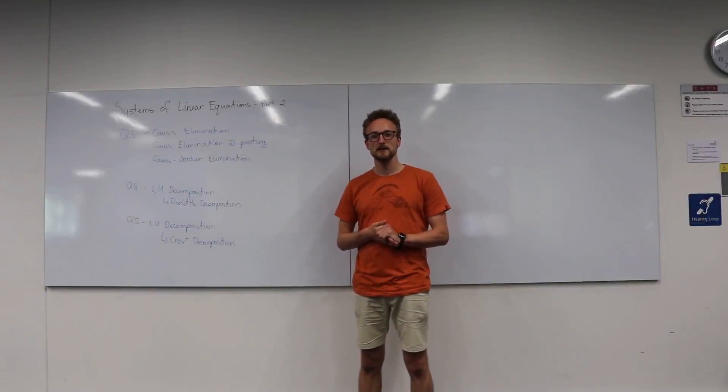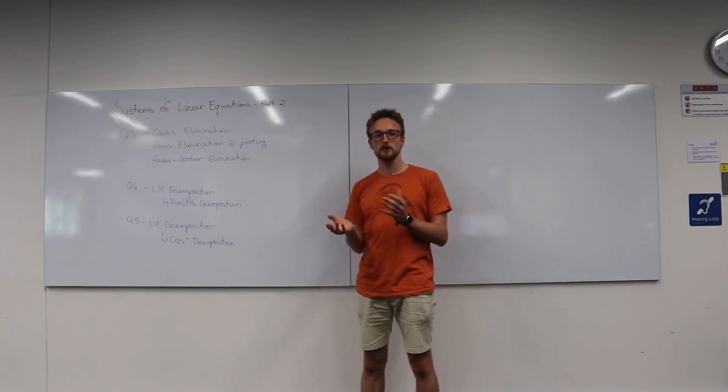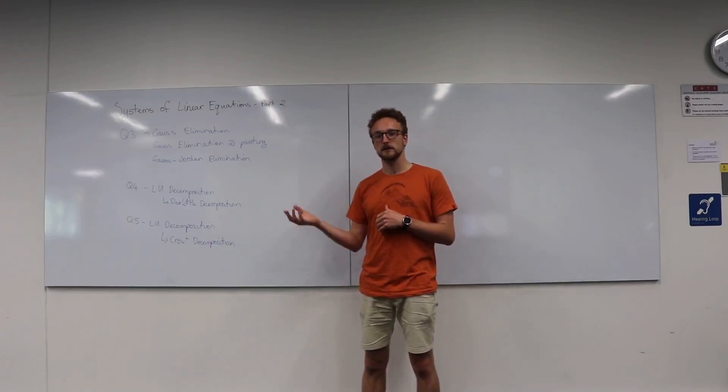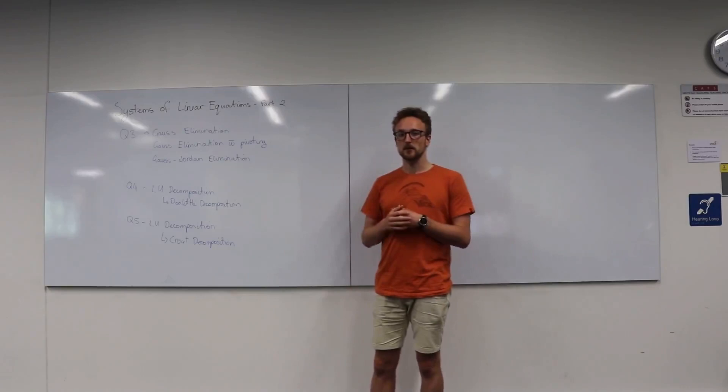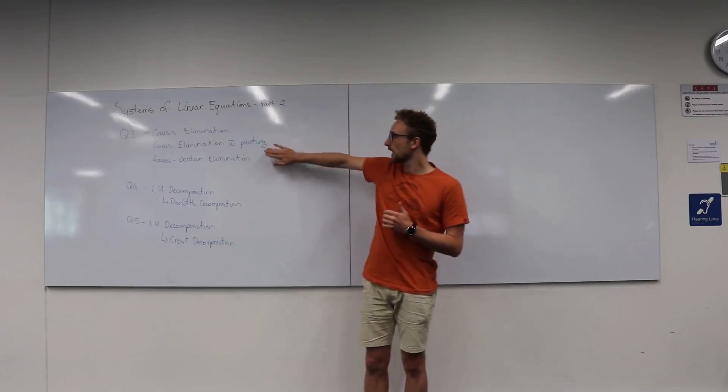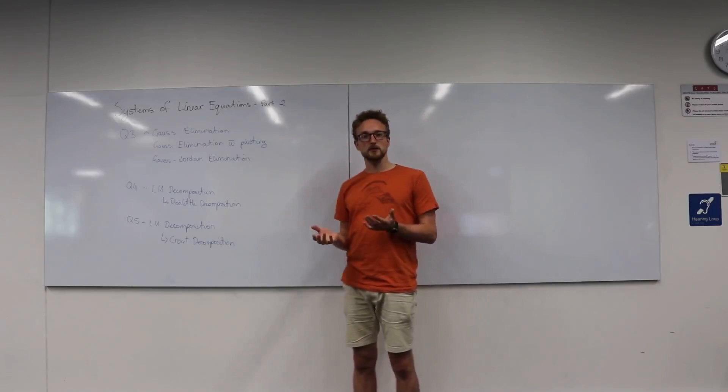G'day everyone, welcome to the first of your online tutorials for Math 2089. This week we're focusing on systems of linear equations, following on from the end of week 4 when we looked at iterative methods, where we did the Jacobi iteration method. This week we're focusing on explicit methods. In question 3 we'll be looking at Gaussian elimination, Gaussian elimination with pivoting, and Gauss-Jordan elimination.